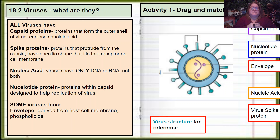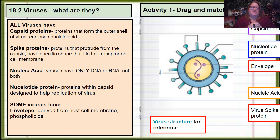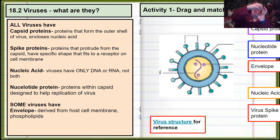All viruses have capsid proteins, and the capsid is the outer shell that protects the nucleic acid inside. Part of the capsid proteins are what we call spike proteins. Spike proteins protrude and have a very specific shape, unique to each virus or family of viruses. These spikes fit into a receptor on a particular cell that the virus infects — like a specific key for a specific lock. Those two shapes are going to be very complementary.